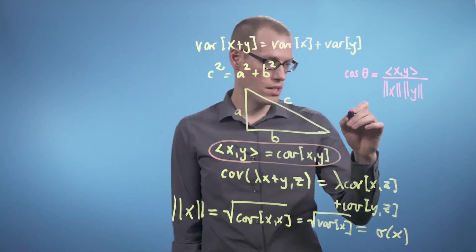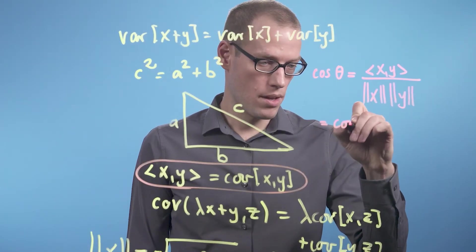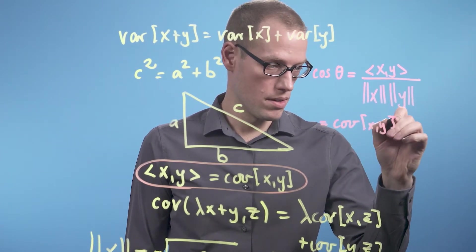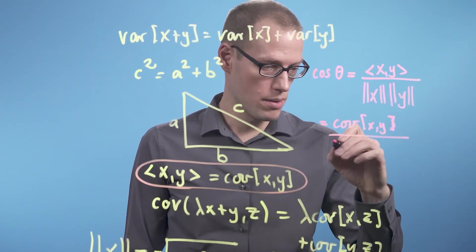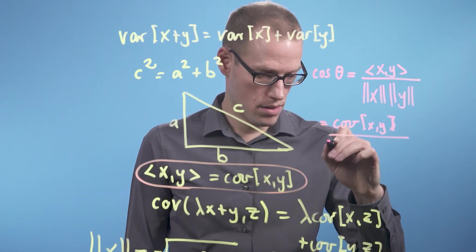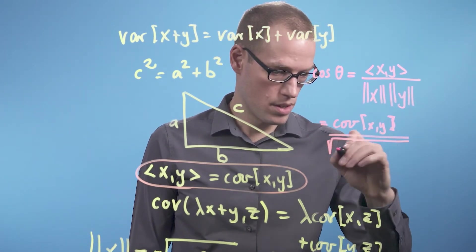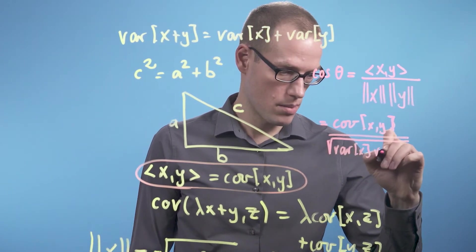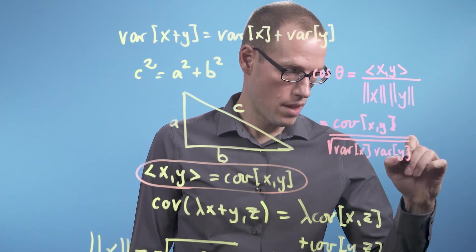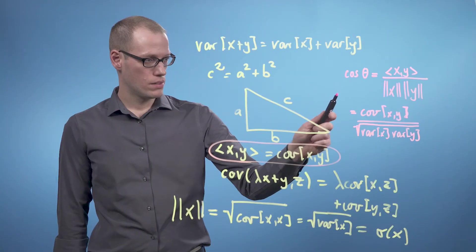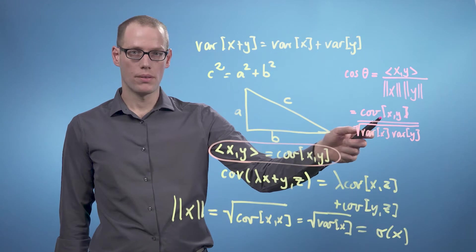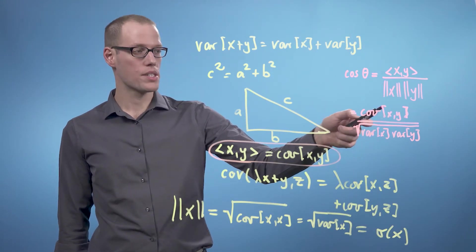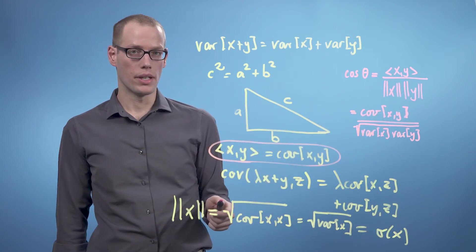And if we now write this out using the definition of our inner product, we get the covariance between x and y divided by the square root of the variance of x times the variance of y. And this evaluates to zero if and only if the covariance between x and y is zero, and that is the case when x and y are uncorrelated.